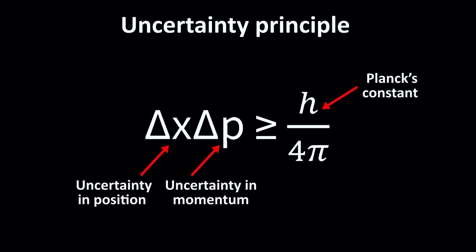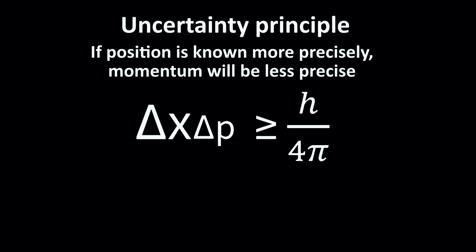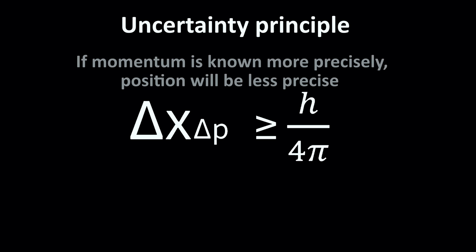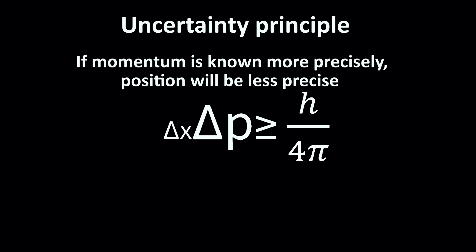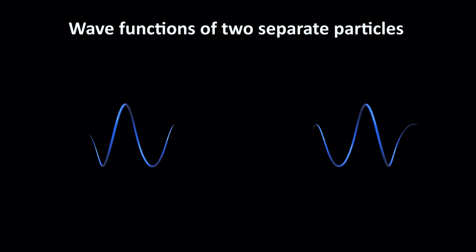Uncertainty. Certain pairs of properties like position and momentum have a built-in trade-off. Sharper position means fuzzier momentum, and vice versa. This isn't due to bad equipment, it's how nature works. Entanglement. Two or more quantum objects can share a joint state, where their properties remain correlated with each other, even across great distances.